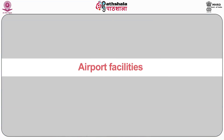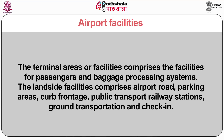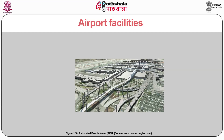Airports are divided into air side, terminal and land side facilities. The air side facilities contain all areas available to aircraft and aircraft gates such as runways, taxiways and ramps. The terminal areas or facilities comprise the facilities for passengers and baggage processing systems. The land side facilities comprise airport roads, parking areas, curb frontage, public transport, railway stations, ground transportation and check-in. Passage between land side and air side is tightly controlled at all airports; to access air side one has to undergo security and passport control.